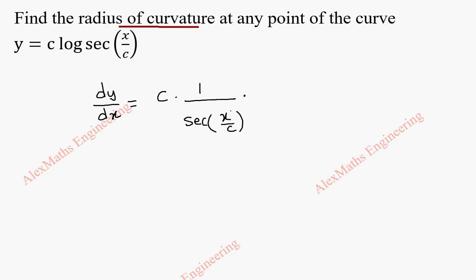Then by chain rule, differentiation of secant x is secant x tan x. So this will be sec(x/c) times tan(x/c). And again by chain rule, differentiation of x/c is 1, so 1/c we keep as it is. So here sec(x/c) we can cancel, and at the same time this c and c we can cancel.